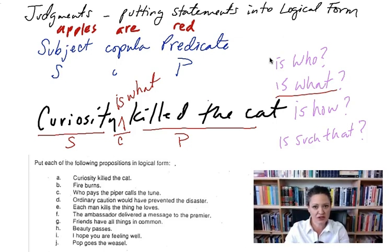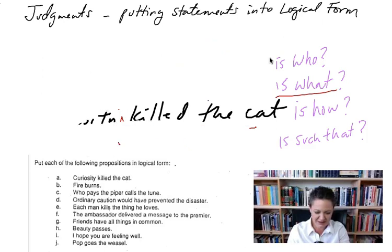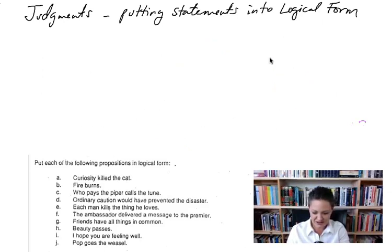Now curiosity is our subject term. Is what is our copula. Killed the cat is our predicate now. So we're going to learn to identify subject, copula, predicate. And if we don't have a copula, we're going to fill in the copula. So let's clean this up a bit. I'm going to clean this board off and we're going to do another one. Isn't that neat? Ah, technology.